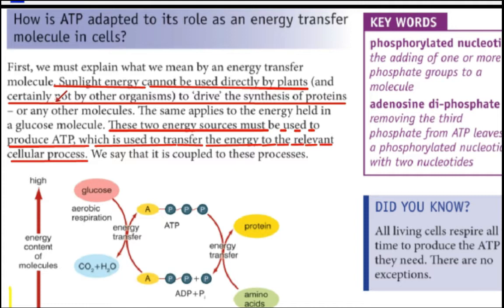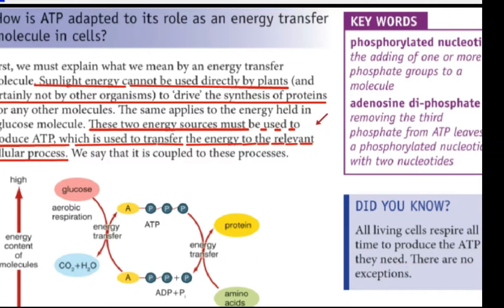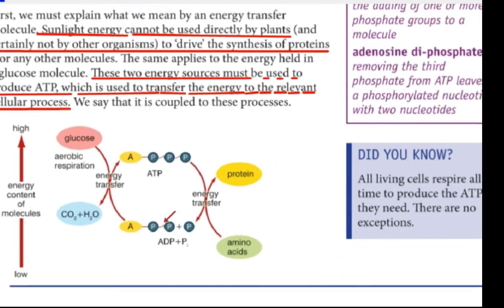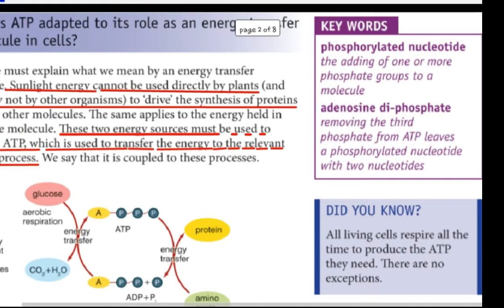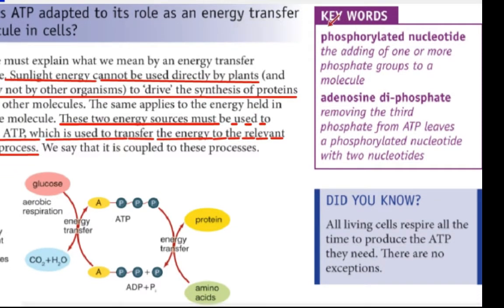Sunlight energy cannot be used directly by plants, certainly not by other organisms, to drive the synthesis of proteins. These two energy sources must be used to produce ATP. If you would like to use ATP, you would use the phosphorylated nucleotide — the adding of one or more phosphate groups to molecules.